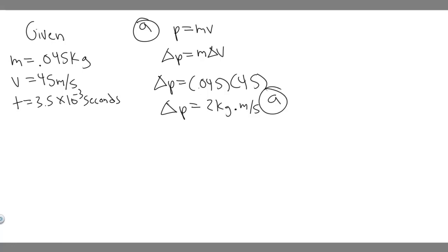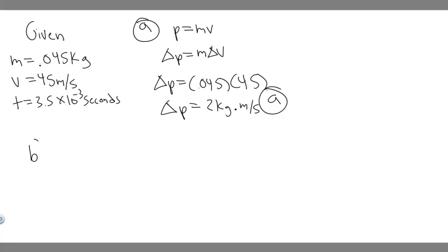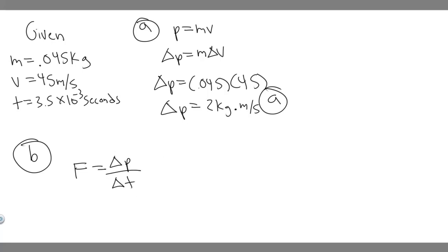Now let's move to B. Part B is asking for the average force exerted on the ball by the golf club. The average force is equal to the change in momentum over the change in time. The change in momentum we just solved for, and the change in time is how long they're in contact — which they tell us is 3.5 times 10 to the minus 3 seconds.